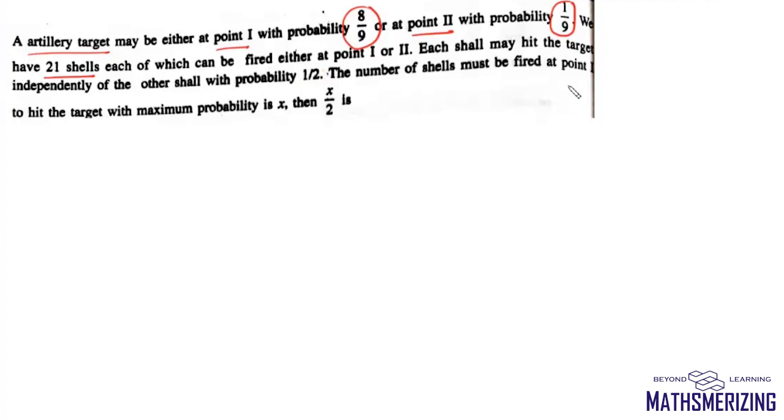An artillery target may either be at 0.1 with probability 8/9 or at 0.2 with probability 1/9. We have 21 shells, each of which can be fired either at 0.1 or 0.2. Each shell may hit the target independently with probability 1/2. The number of shells fired at 0.1 to hit the target with maximum probability is x, and we need to find the value of x/2.